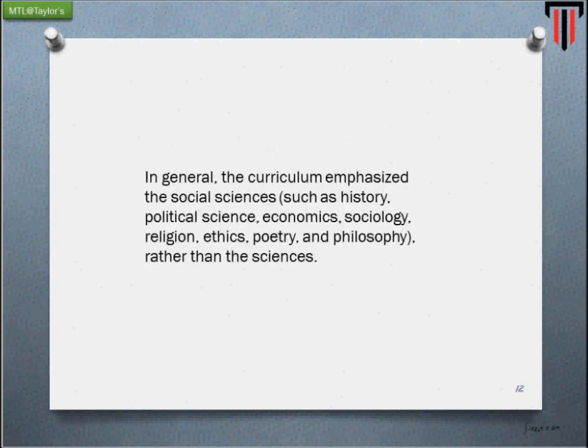In general, the curriculum emphasizes social sciences such as history, political science, economics, sociology, religion, ethics, poetry, and philosophy rather than natural sciences. It may be true that these social sciences subjects have a natural blending with reconstructivism. However, it's not exclusively so. Science by nature is about society — science doesn't exist outside society. Why would maths or science exist outside society? Their functionality is to be embedded in society. Many literatures do argue that social sciences tend to naturally blend into a reconstructive perspective, as opposed to the natural sciences.